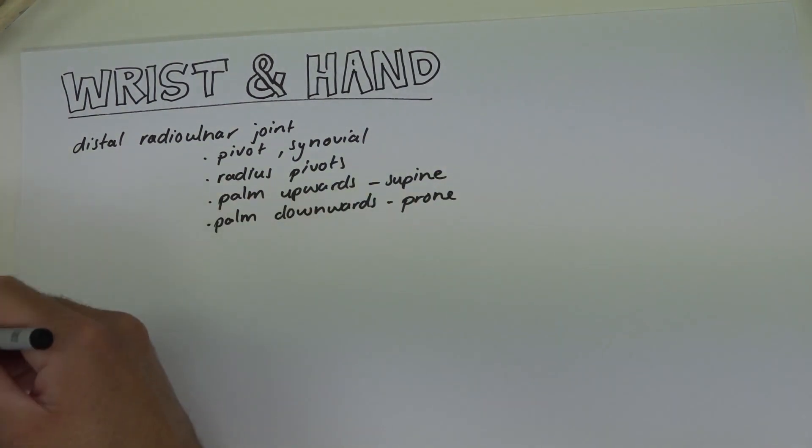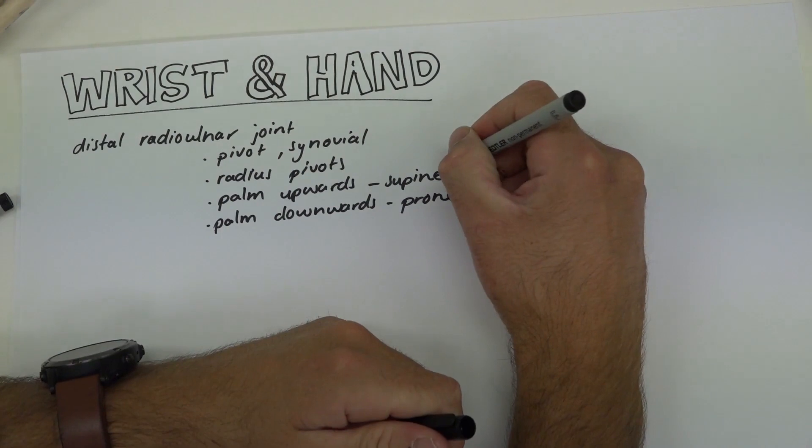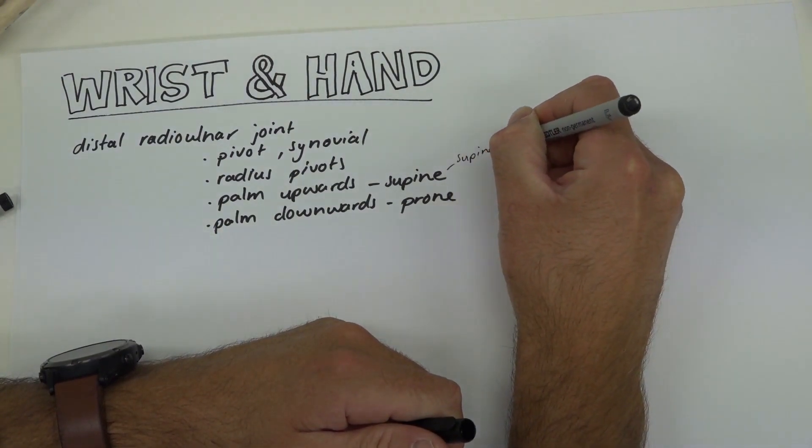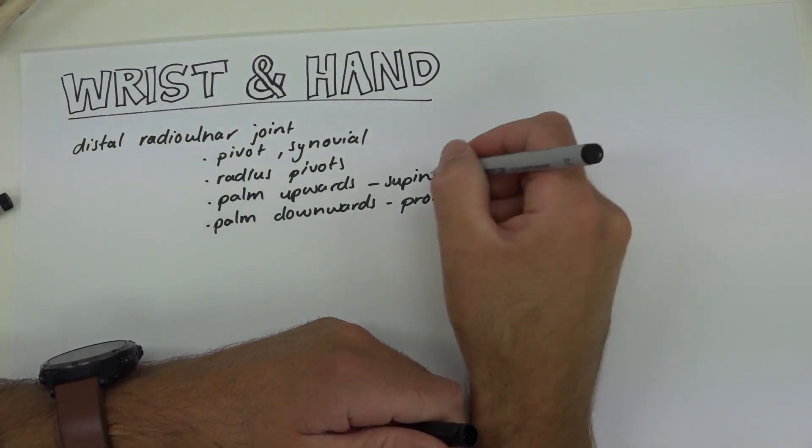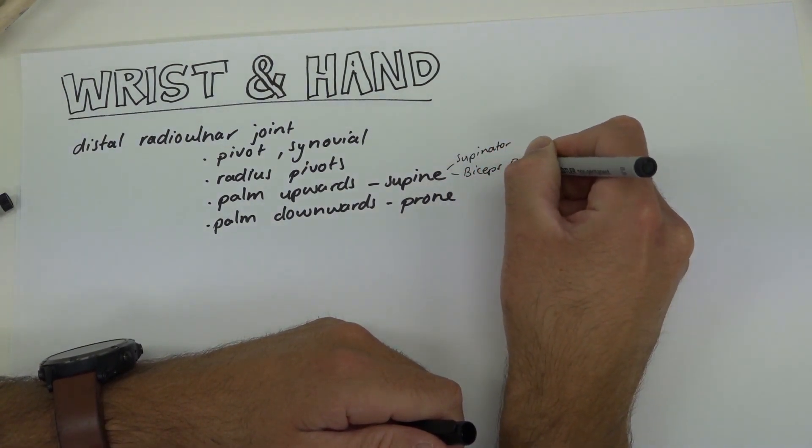We have muscles specifically for these actions like the supinator, which we discussed in the forearm muscle video, and then also the biceps brachii.